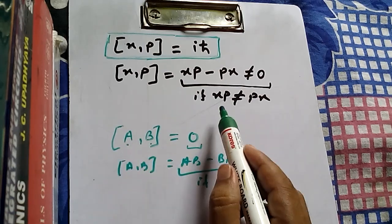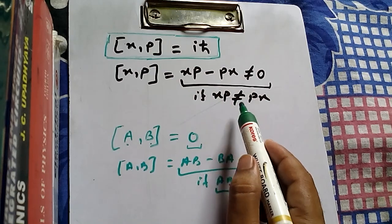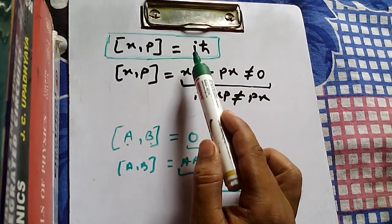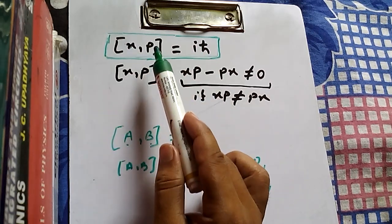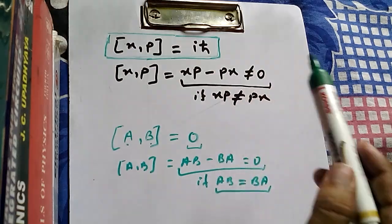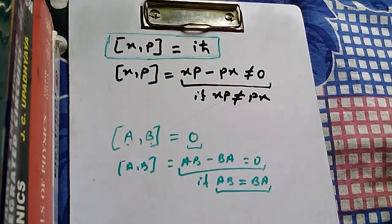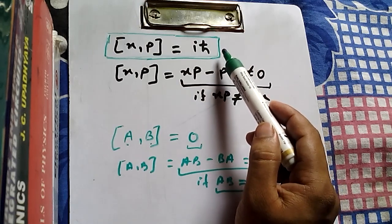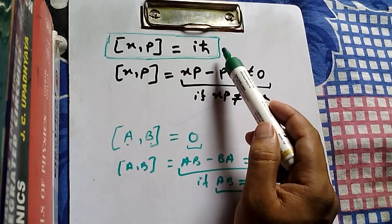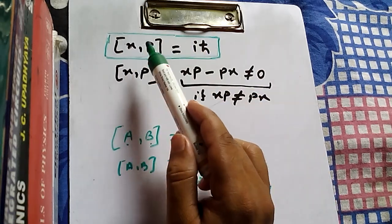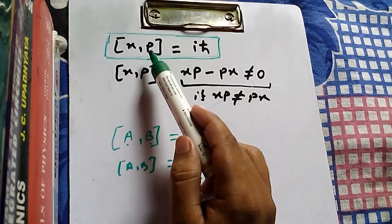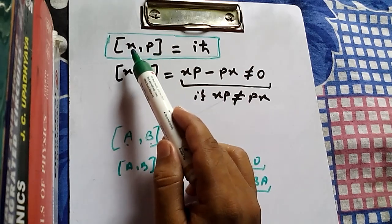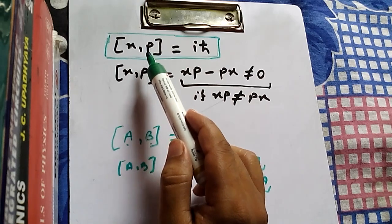When AB equals BA, the commutator becomes zero and we say A and B commute. But here, since XP is not equal to PX, the result is nonzero, so X and P do not commute. This is one of the most important relations in quantum mechanics — it is said that all of the mystery of quantum mechanics is hidden in the fact that position and momentum do not commute with each other.